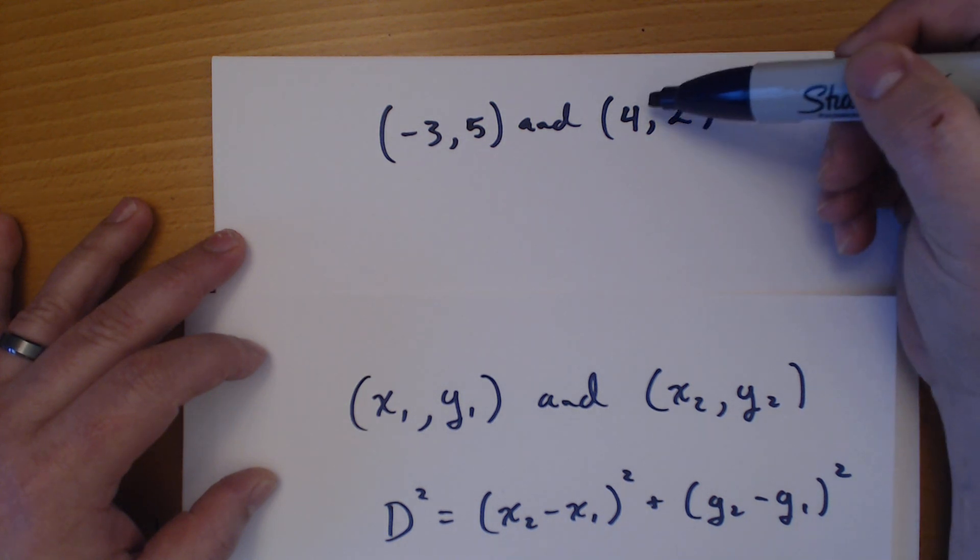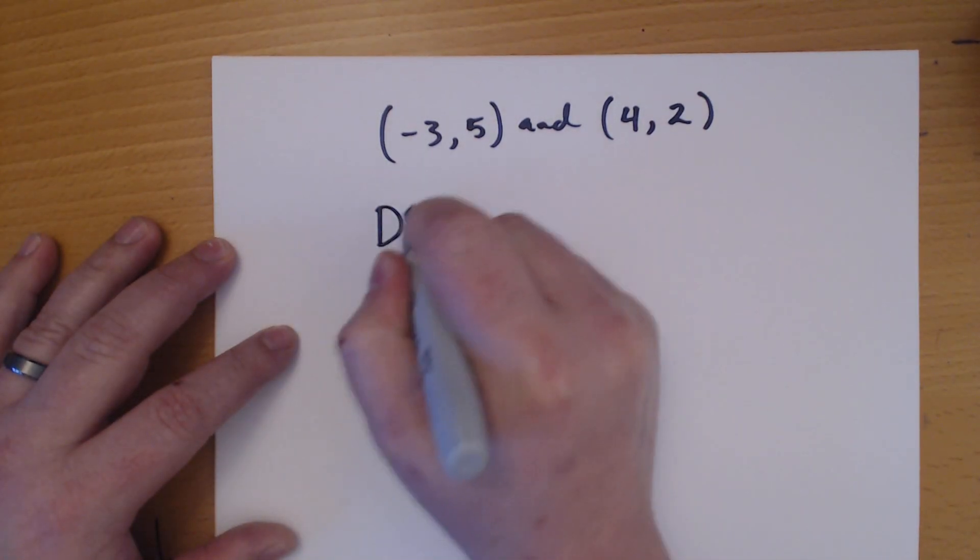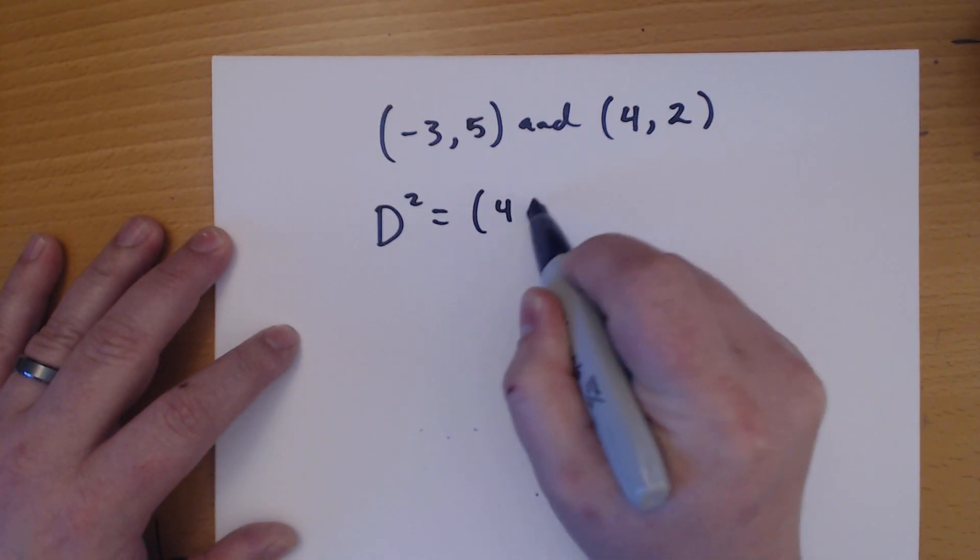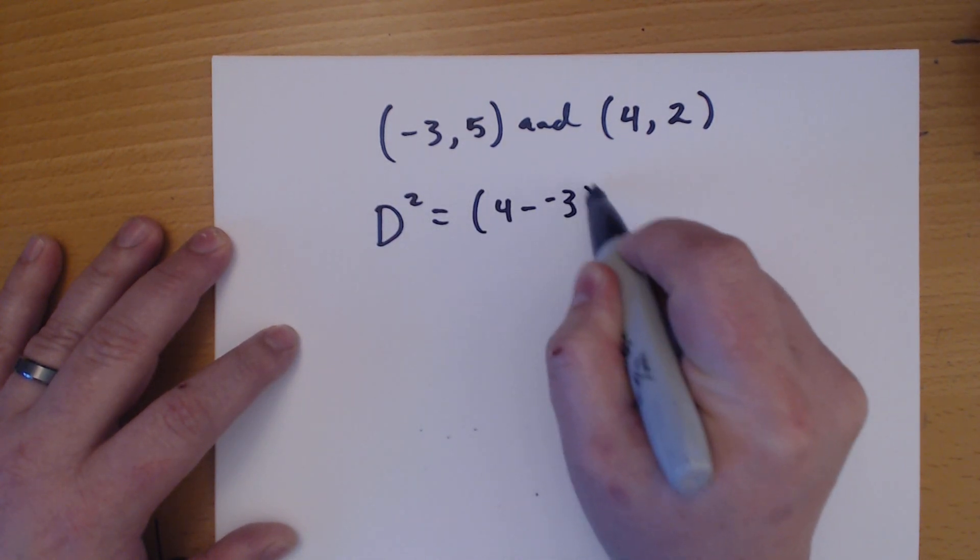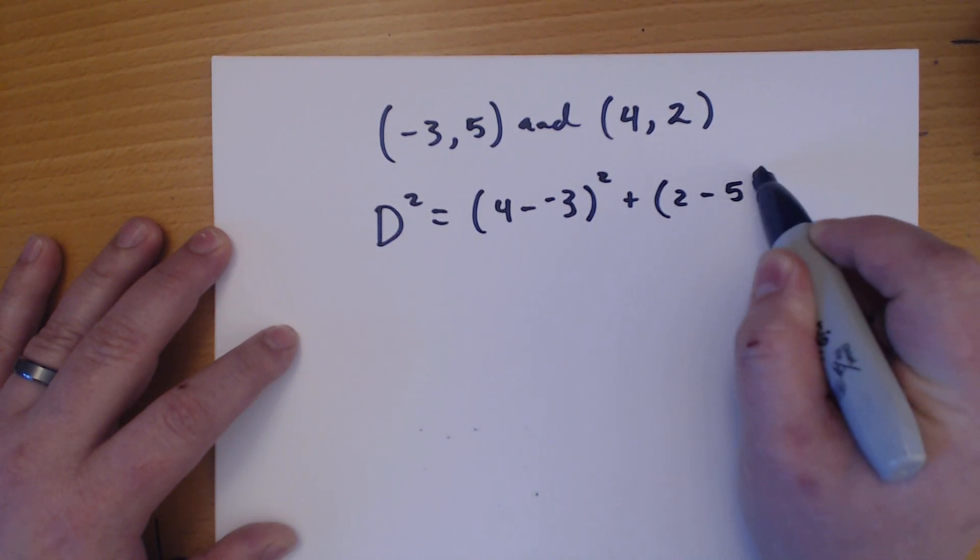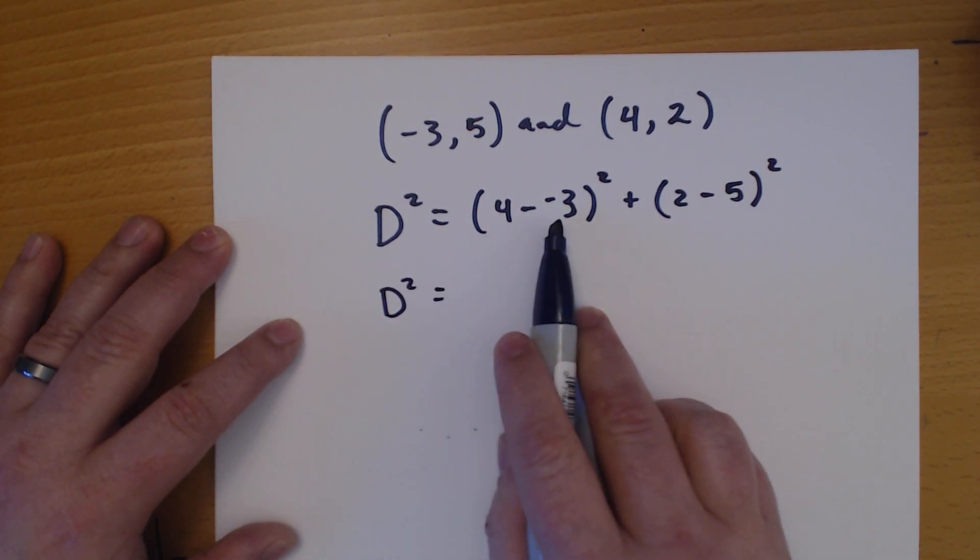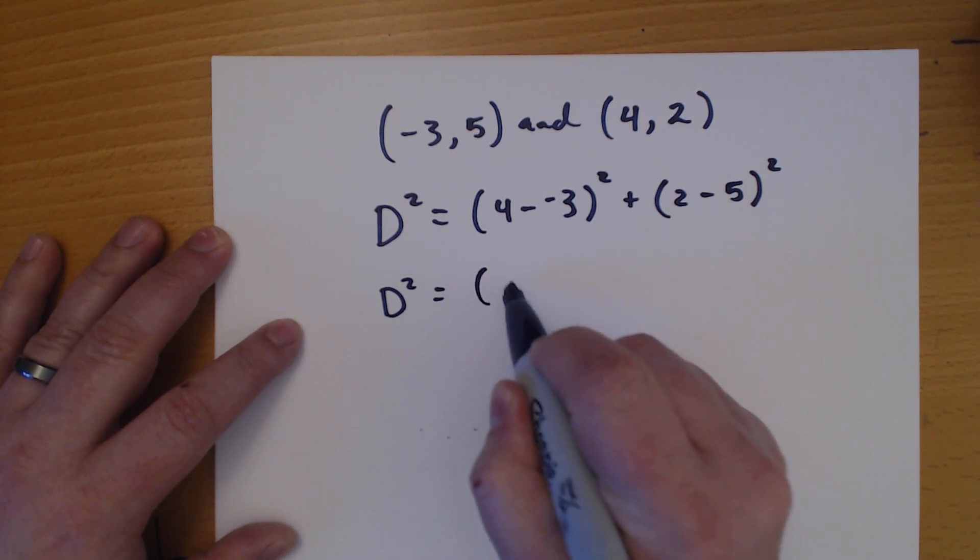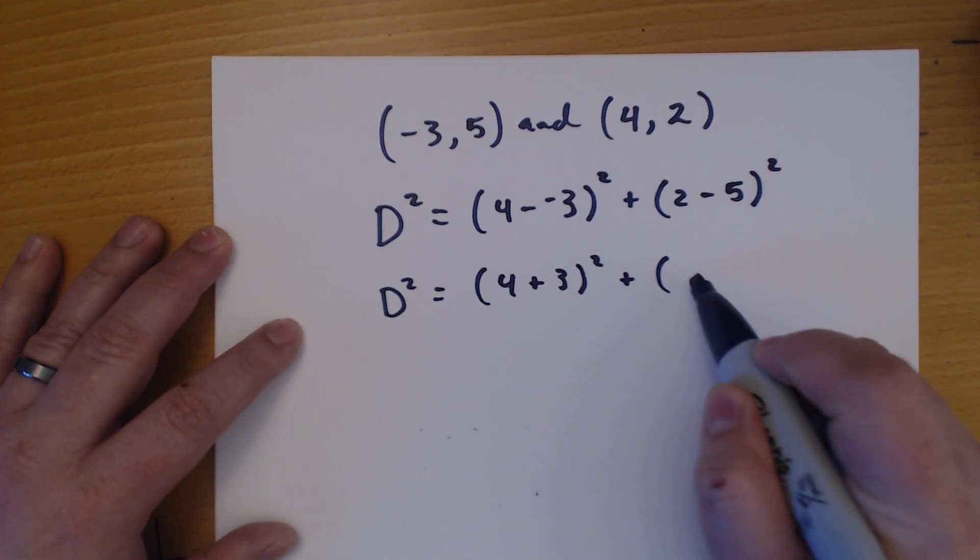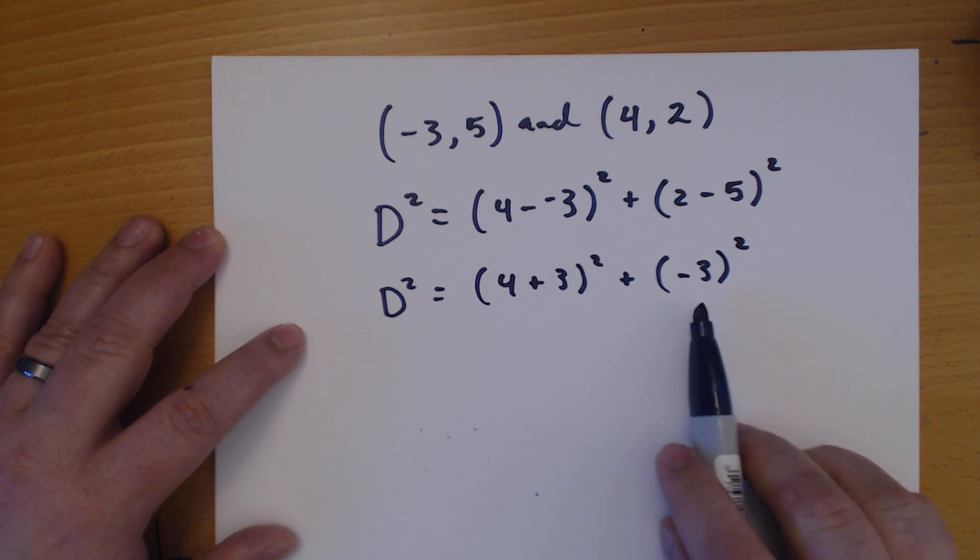So I take my x's and I subtract them. So D squared, can't forget that. You lose an equal sign, you're in trouble. And I do 4 minus a negative 3. Don't forget to square it. Now, a negative and a negative cancel each other out and become a positive. So I have 4 plus 3.